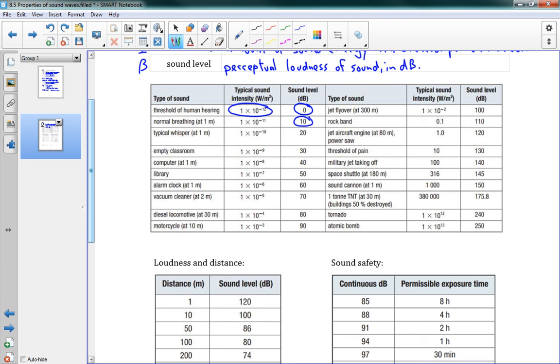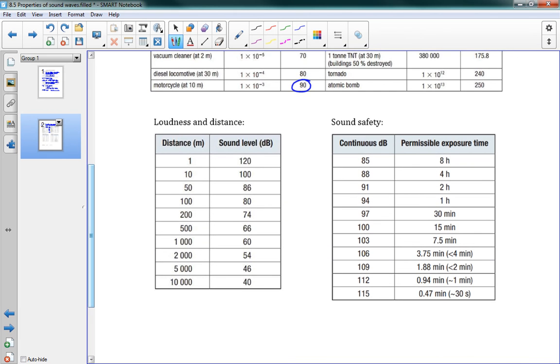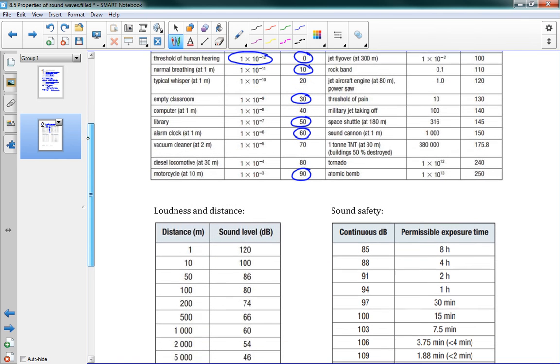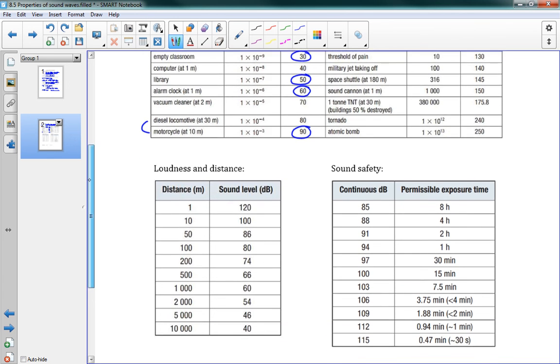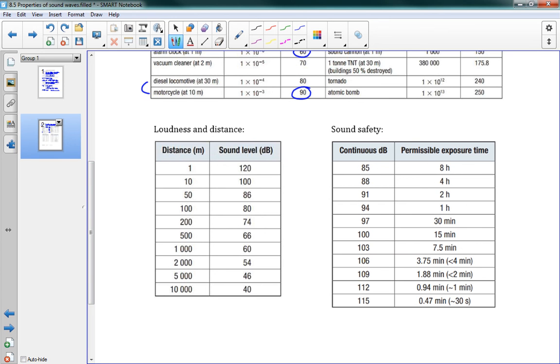Normal breathing, decibel level of 10. You can see that if we're talking about, what's a good idea? An empty classroom here is 30. If you're in the library, that's about 50 decibels. An alarm clock is 60. So you can see how it sort of goes up. And as we get to our louder things, a motorcycle is 90 decibels. There's a certain level where you're actually doing damage to your ear. And that's what these charts down here are for. If you look at the sound safety on the bottom right here, you can see that if I'm listening to something at 85 decibels, that's somewhere between a diesel locomotive and a motorcycle. So if you're on a motorcycle, or if you're near a motorcycle, even 10 meters away, that's 90 decibels. It means you can be listening to that for eight hours before you start doing damage to your ear. And this is permanent damage. Once you do this damage, you can't ever get it back. So that's at 10 meters away from a motorcycle. If you're actually on it, it's going to be a lot shorter than that.